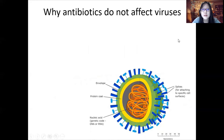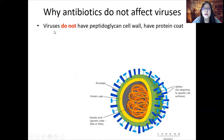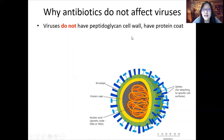Let's talk about why antibiotics don't affect viruses. Viruses have a very simple structure: a nucleic acid — DNA or RNA — inside, surrounded by a protein coat, and outside that an envelope with many glycoproteins, sometimes called spikes. Antibiotics like penicillin cannot affect viruses because viruses do not have a peptidoglycan cell wall — instead they have a protein coat, so the drugs don't work against them.